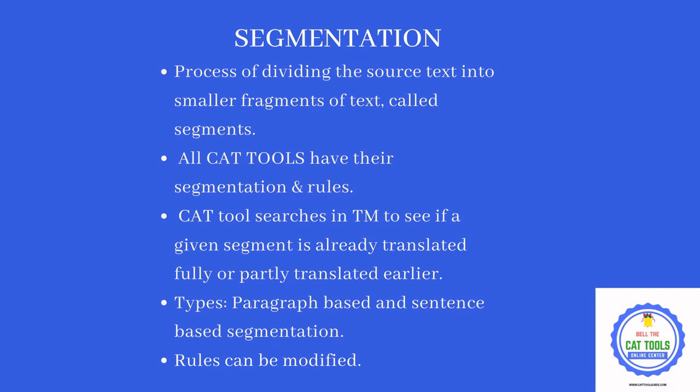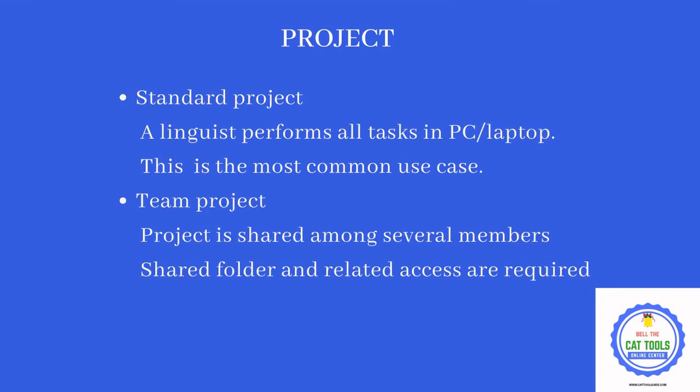When you want to translate a particular sentence and there is no match, it will keep the target side empty, so you have to manually enter the translation. Segmentation is generally paragraph-based or sentence-based; by default it is sentence-based, and you can always modify the segmentation rule in a CAT tool.